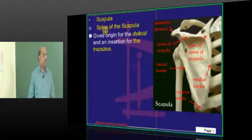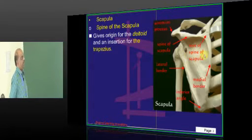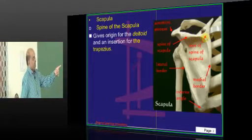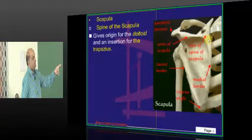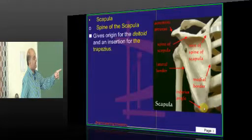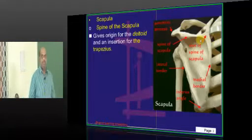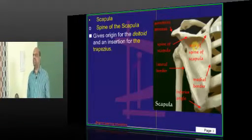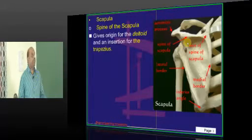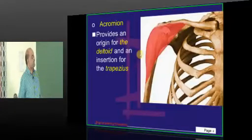With regard to the scapula, what are the important landmarks to remember? This is called the spine of the scapula. For the spine there is a root, and the scapula has a medial border and one inferior angle. The spine is very important because it is the site from which the deltoid arises and the insertion of the trapezius basically happens from the spine of the scapula.